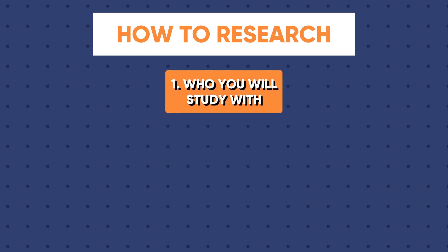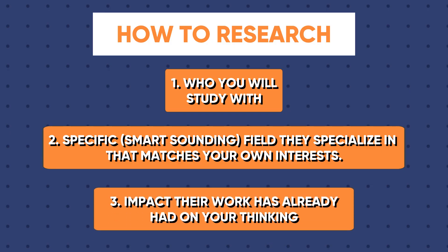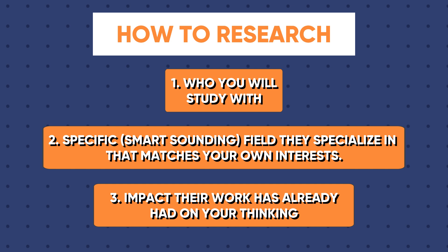I have a whole separate video on how to research for these programs, but here are three quick tips. Number one: figure out who you're going to study with — and yes, that means researching faculty. Number two: include the specific smart-sounding field you're going to study with them in. Trust me, you can't get geeky enough on this section — the more jargon and nerding out on your subject, the more you'll sound like a grad student ready to jump in tomorrow. And number three — something students often forget: include specific impacts that faculty work has already had on your thinking, or if you haven't studied their work yet, anticipate ways your thinking might shift based on working with them.